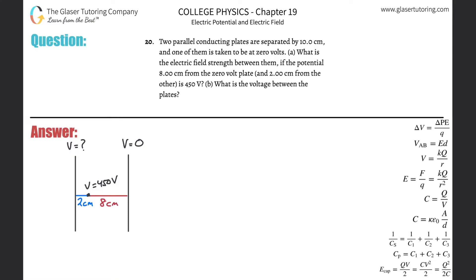Number 20: Two parallel conducting plates are separated by 10 centimeters, and one of them is taken to be at zero volts. Letter A: What is the electric field strength between them if the potential 8 centimeters from the zero volt plate and 2 centimeters from the other is 450 volts? So here's a little picture parallel plate, we got a plate over here and a plate over here.